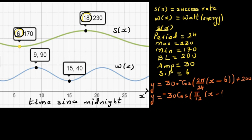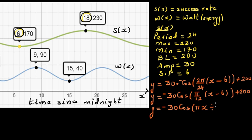To enter this in the calculator you should write it as: minus 30 cos of (πx/12 minus 6π/12), plus 200. This will give you the perfect graph on a graphing calculator.